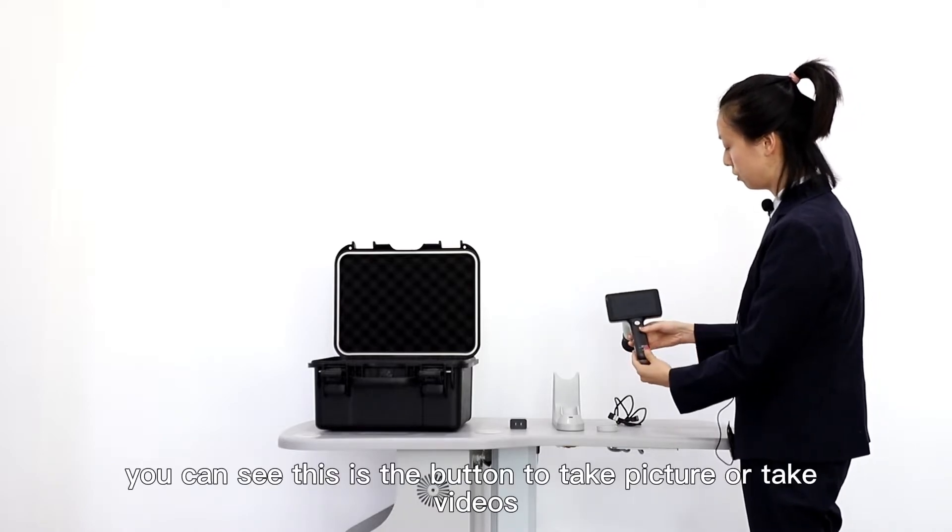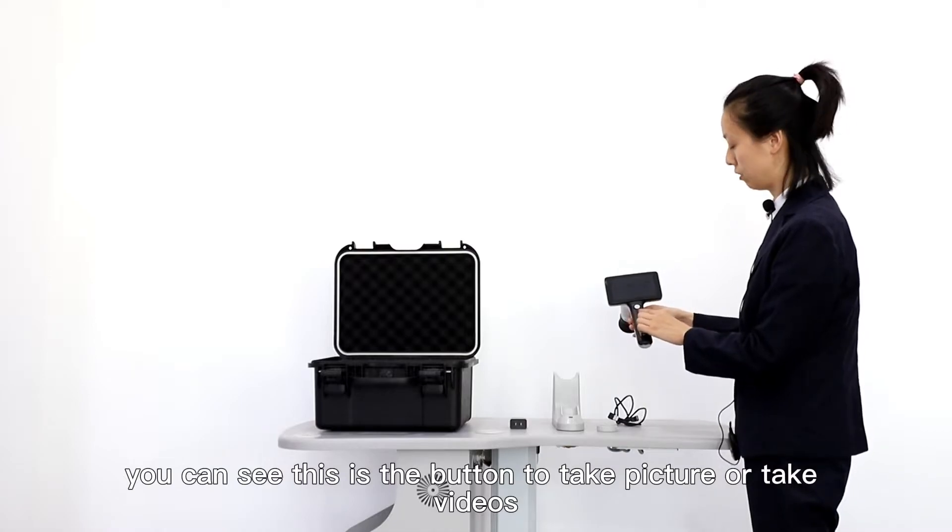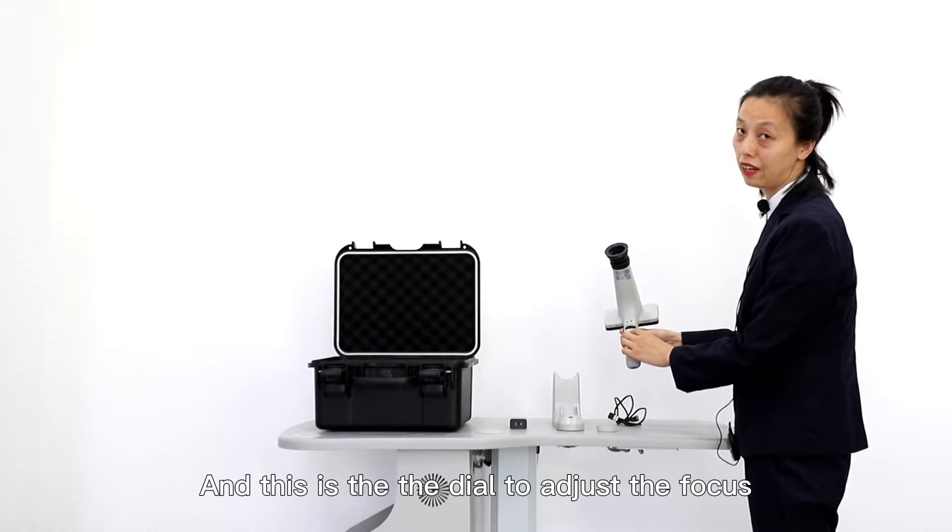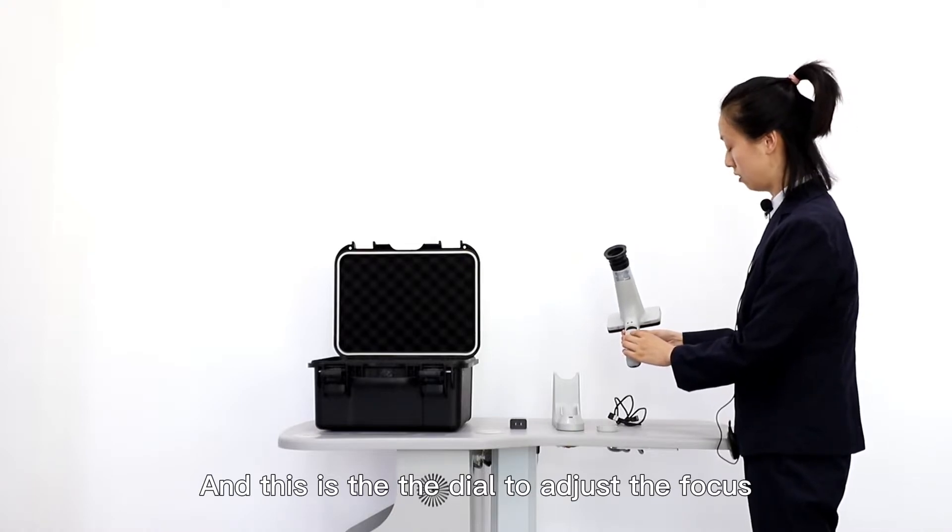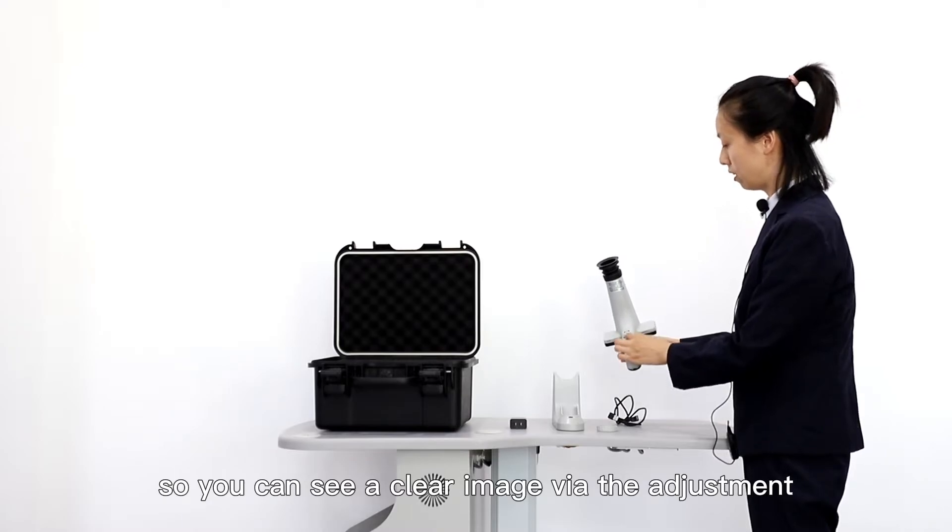You can see this is the button to take pictures or take videos. This is the dial to adjust the focus, so you can see a clear image via the adjustment.